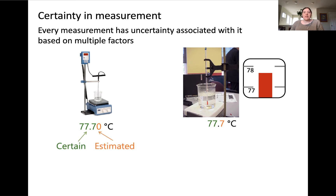Let's say that your temperature probe gives a measurement of 77.0 degrees Celsius. In this measurement, the first three digits are certain, meaning there is no ambiguity or uncertainty associated with them. The last digit, however, is estimated, and this is referred to as the uncertain digit.